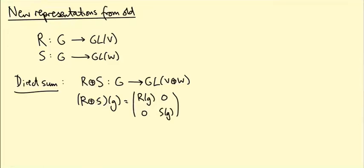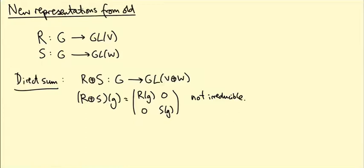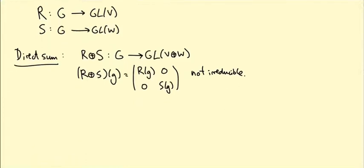The direct sum is no use for constructing irreducible representations, because it will never be irreducible unless one of the two summands is the zero representation. The reason is that r is always a sub-representation, or s is always a sub-representation, so it's definitely not irreducible. So what other ways do we have of constructing new representations?